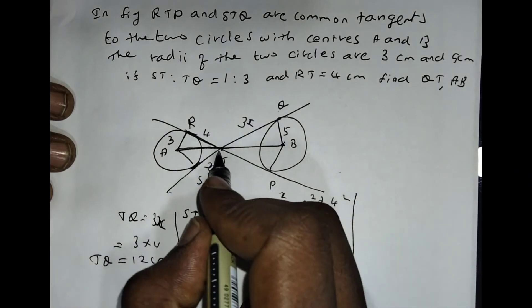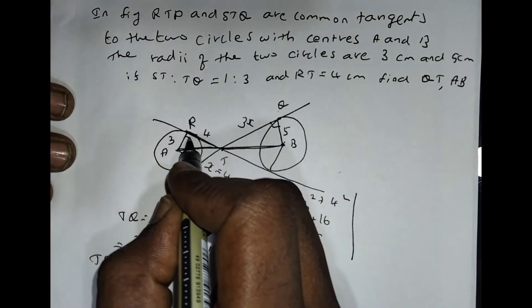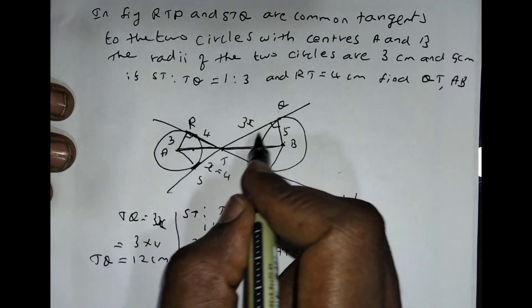Like that, find the length of DB. Because here 90 degrees is there, so it is a hypotenuse side.